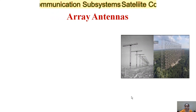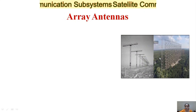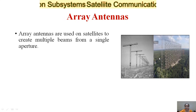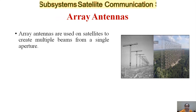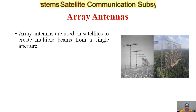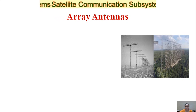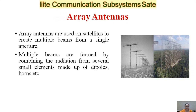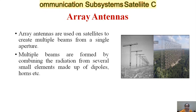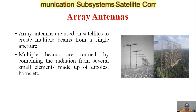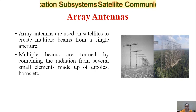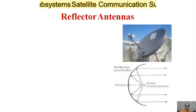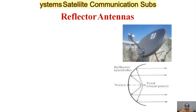The third type is array antennas. These are used in satellites to create multiple beams from a single aperture. Multiple beams are formed by combining the radiation from several small elements made up of dipoles and horns.